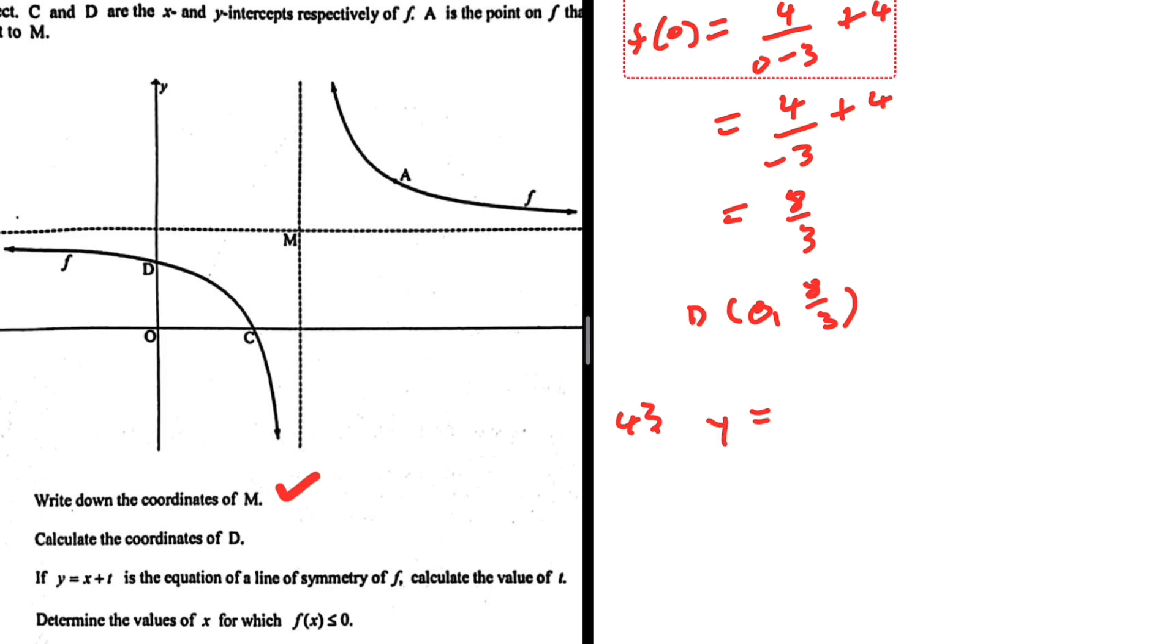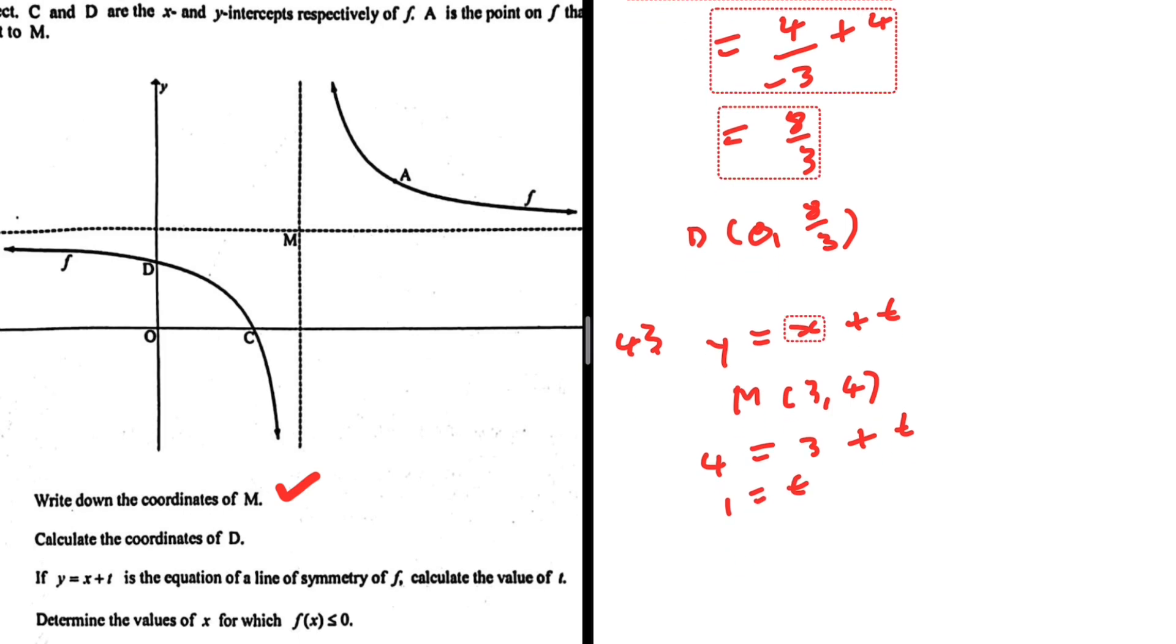So we have y equals x plus T. In order to find that value of T, we need to substitute M's coordinates, 3 and 4. When we want to find the equation of the line of symmetry, you substitute where the asymptotes meet all the time. So we would have 4 equals 3 plus T, 1 equals T.